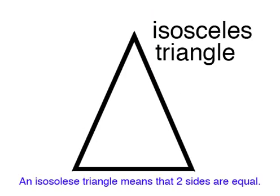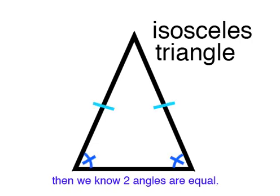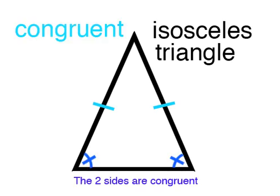An isosceles triangle means that two sides are equal. If we know two sides are equal, then we know two angles are equal. The two sides are congruent and the two angles are congruent.